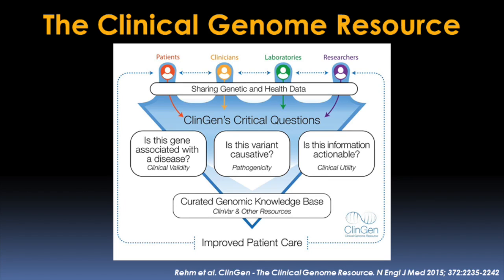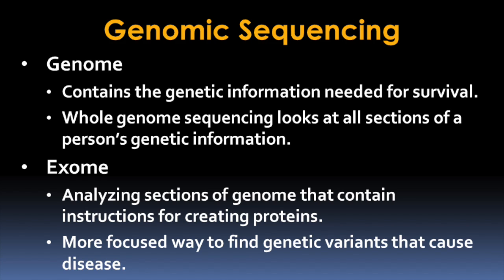If patients share their variant and information with our genetic databases, and other patients with the same variant or variants in the same gene also share, bringing that knowledge together can help us learn more information that might eventually allow us to interpret their variant — tell them whether it actually causes their disease and what else they might expect from their condition. Today we're mainly focusing on individuals more likely to have a rare genetic disorder, but any individual who's had genetic testing — whole genome sequencing, exome sequencing, or a genotype service like 23andMe — can register on GenomeConnect.